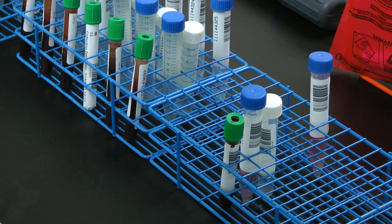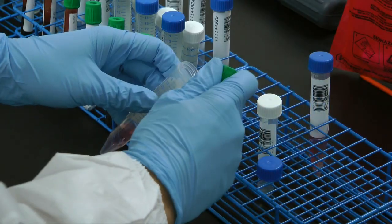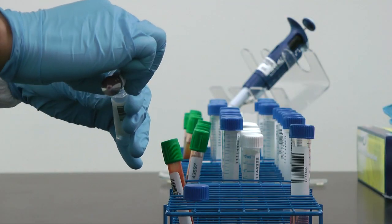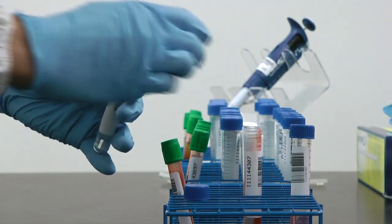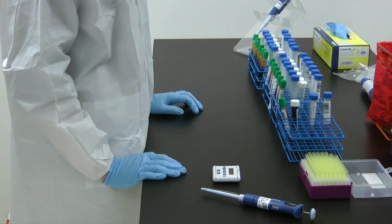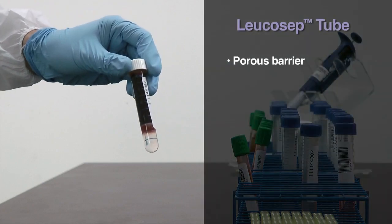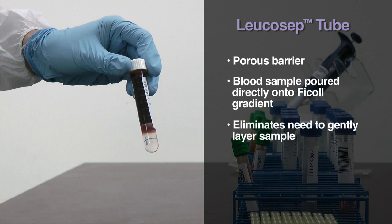The technologist then proceeds with isolation of peripheral blood mononuclear cells or PBMCs. Treated whole blood is mixed with RPMI 1640 medium and then poured directly into a Leukacept tube. Leukacept tubes offer a time-saving approach to FICOL gradients. The tubes contain a porous barrier that enables the blood sample to be poured directly onto the FICOL gradient, eliminating the need to gently layer the sample.